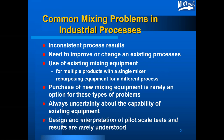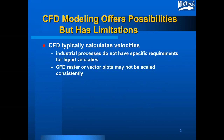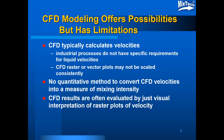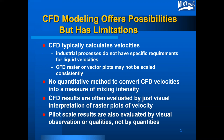Design and interpretation of pilot scale tests and results are rarely well understood. While CFD modeling offers some possibilities, it also has some limitations. CFD typically calculates velocity; however, industrial processes do not have specific velocity requirements. CFD raster or vector plots may not be scaled consistently, such that red on one plot may not be the same as red on another. There is no quantitative method to convert CFD velocities or representations to a specific measure of mixing intensity. CFD results are often evaluated just by visual interpretation of raster plots, which can be subject to personal interpretation. Pilot scale results are also evaluated by visual observation or qualities and not necessarily by quantities.